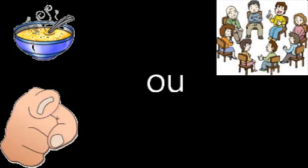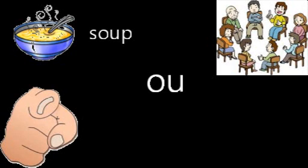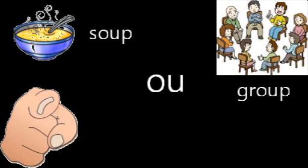We've looked at the 'ou' digraph as an 'ow' sound, but with these pictures and words the 'ou' digraph can also make an 'oo' sound. In the top left corner we've got a lovely hot bowl of soup — 'soup'. In the top right corner we've got some people sitting in a group — 'group'. And finally we've got a hand pointing at you — 'you'.